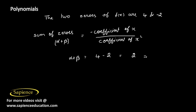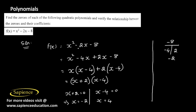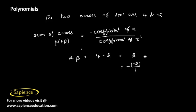This can be written as -(-2)/1. Looking at the polynomial, the coefficient of x is -2, so this is of the form -b/a, where a = 1. Thus the relationship, sum of zeros = -(coefficient of x)/(coefficient of x²), is verified.